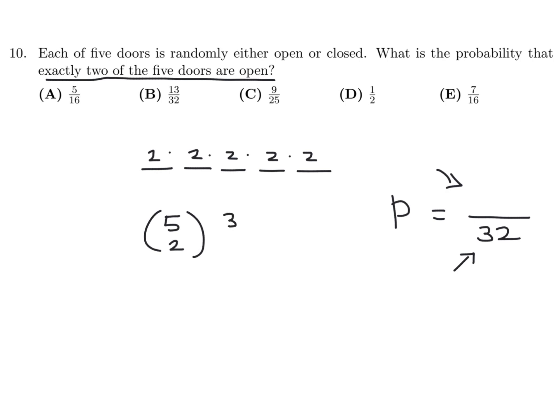So this is going to be 5 factorial over 3 factorial over 2 factorial, and this is just 1. So that's 5 times 4 over 2, and I believe that's 10. So 10 goes here, and in lowest terms that's 5 over 16. So number 10, answer is A.